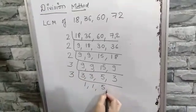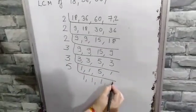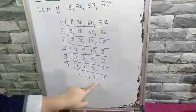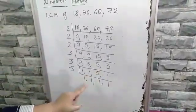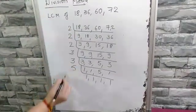Last is 5. You will stop your process when you get 1 at the end. Please have a look: you've got 1 everywhere. Now how to find the LCM? You just multiply all the prime numbers whatever you have got.